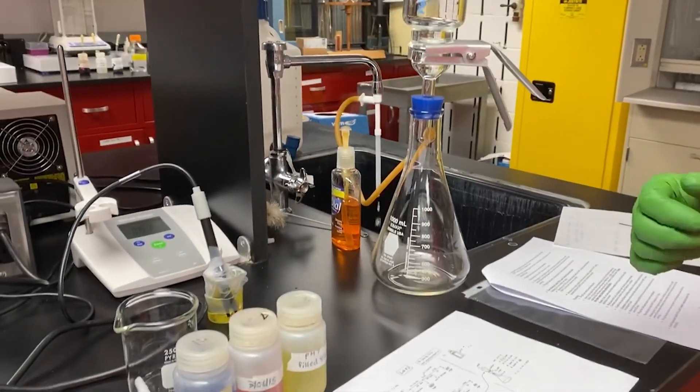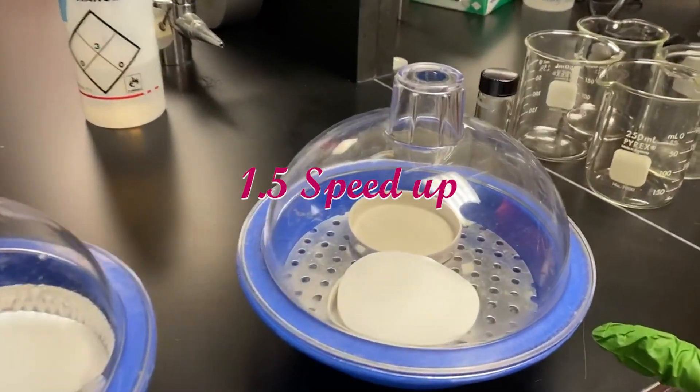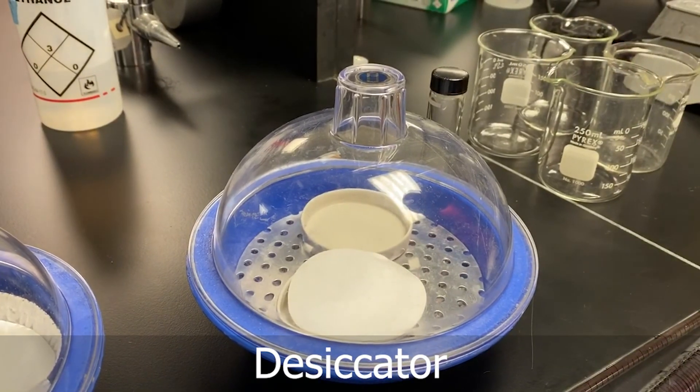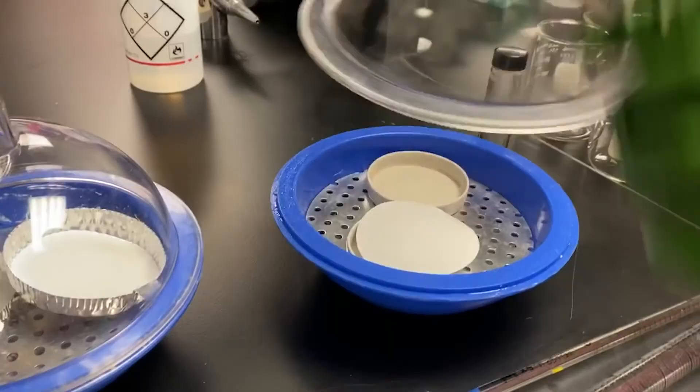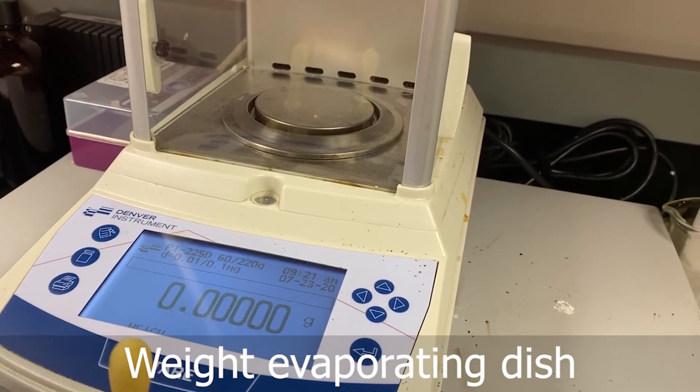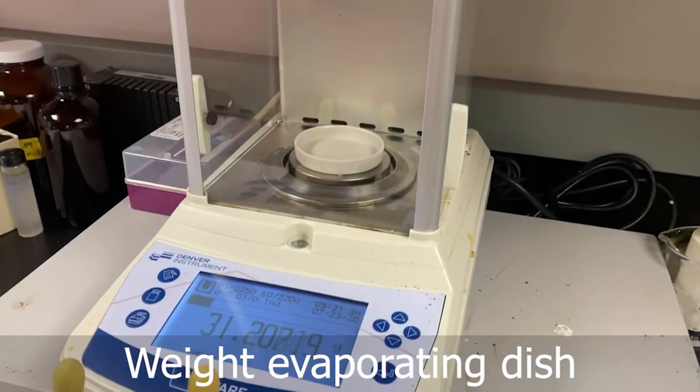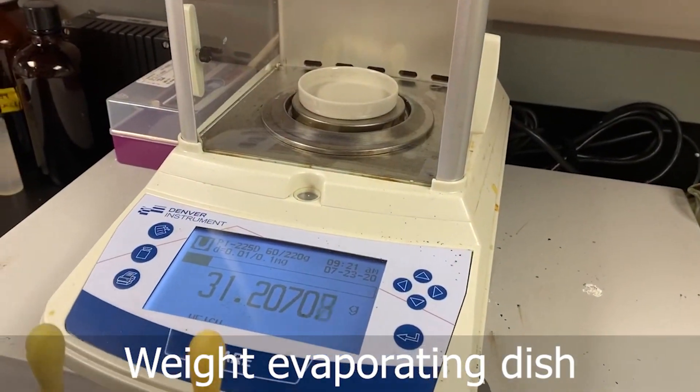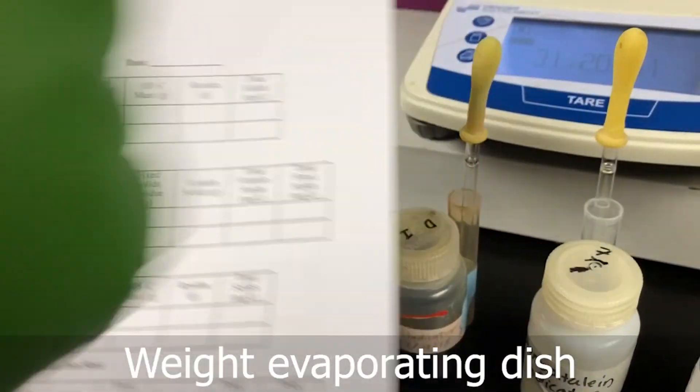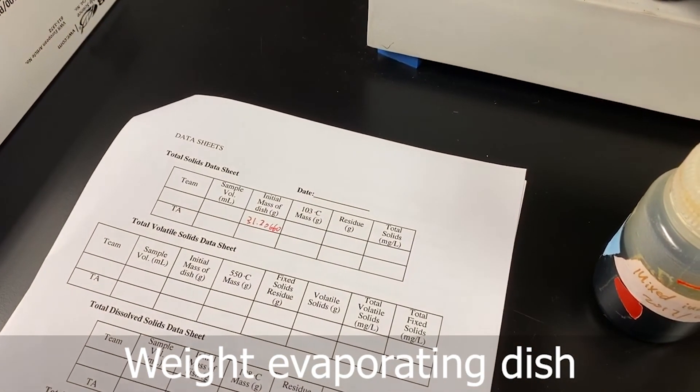So let's get started. We have all of the stuff in this desiccator because we want to avoid water getting into our equipment. The first one is the total solids. We just grab the wastewater sample dish and then we can measure the weight. In the datasheet, this is the initial mass of the dish.